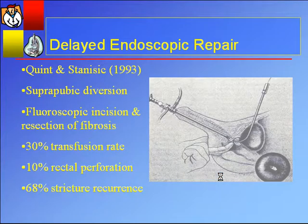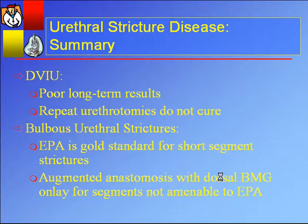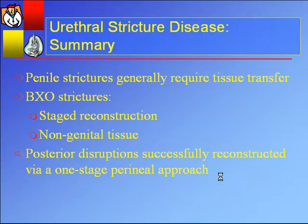Delayed endoscopic repair has been described — a cut-to-the-light procedure through a wall of fibrosis — but it's marred with complications: 30% transfusion rate, 10% rectal perforation rate, and success isn't that great. Most would advocate the delayed perineal approach for reconstructing these patients. In summary: DVIU has poor long-term results; repeat urethrotomies will not achieve cure. For bulbous urethral strictures, excision and primary anastomosis is the gold standard for short segments, and augmented anastomosis with buccal graft will probably be the gold standard for longer segments. Penile strictures generally require tissue transfer, and in BXO a staged reconstruction using non-genital skin is best. Posterior disruptions from trauma are generally successfully reconstructed using a perineal approach in one stage.